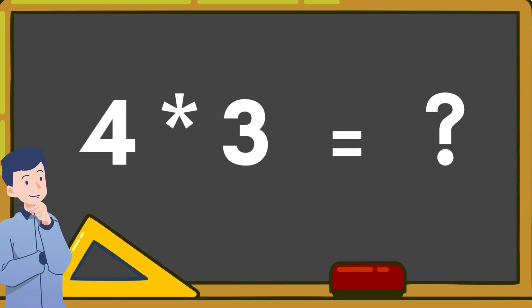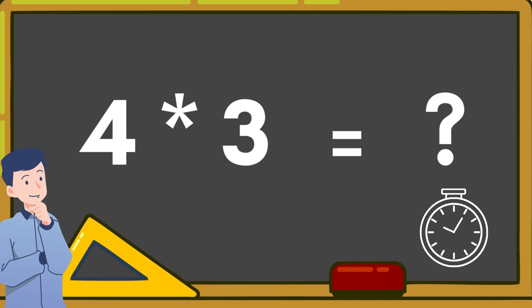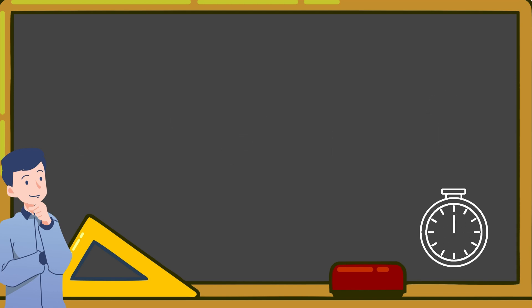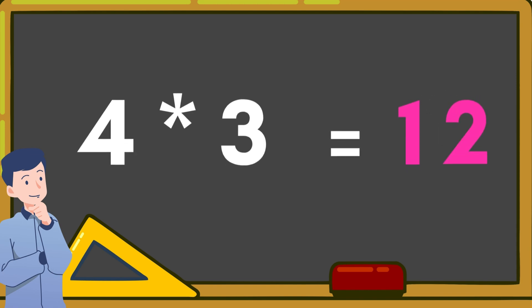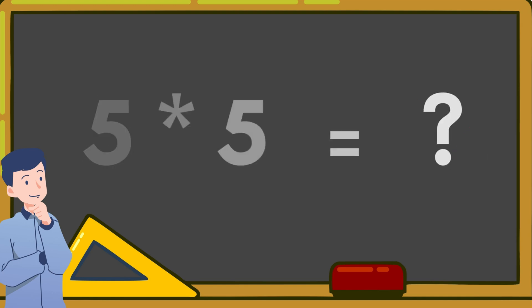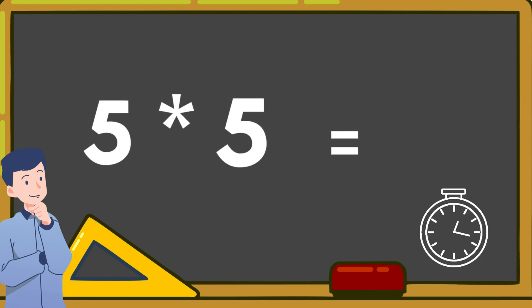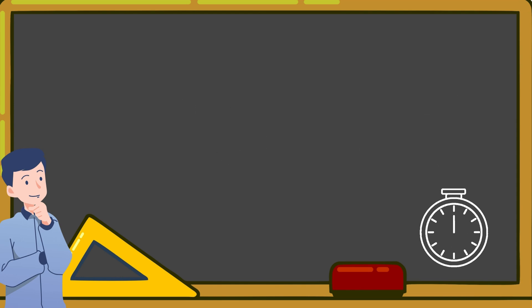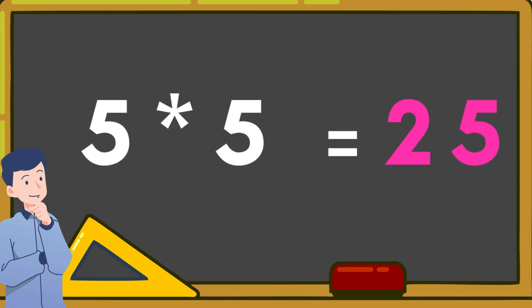4 times 3 is equal to — That's correct. 4 times 3 is equal to 12. 5 times 5 is equal to — That's correct. 5 times 5 is equal to 25.